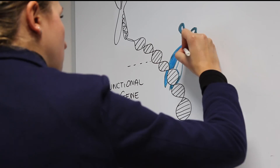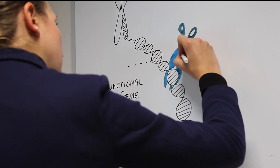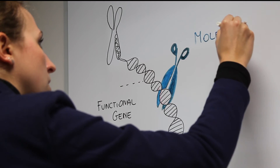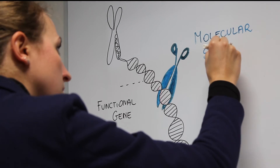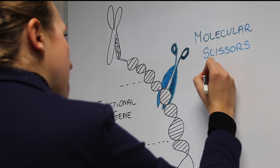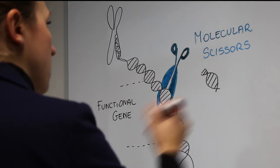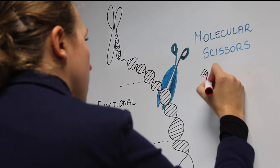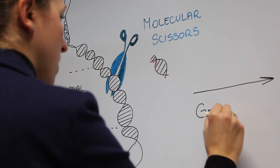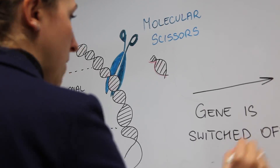Molecular scissors are used to cut both strands of DNA at a specified site, snipping out the unwanted text. By inactivating the target gene, sterile conifers will be created for the first time.